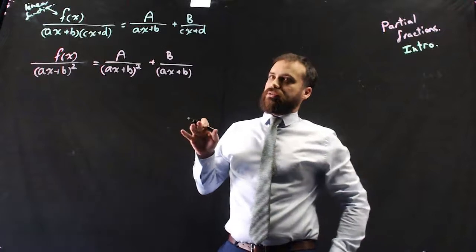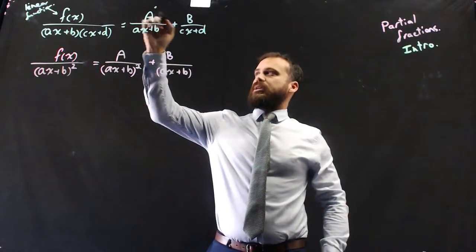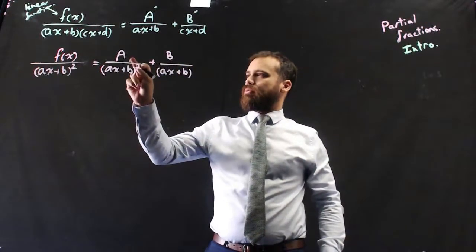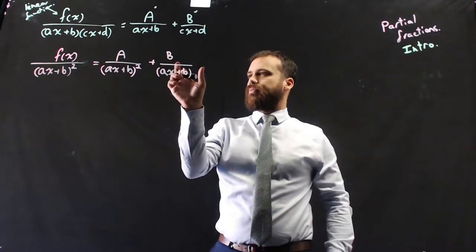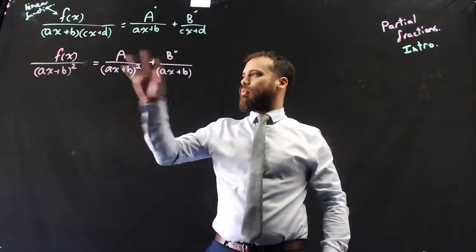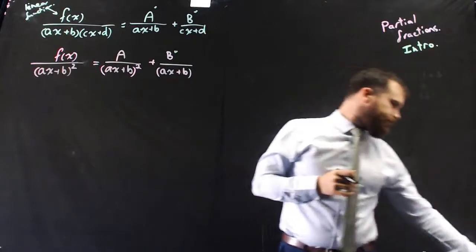Now, what that means for this whole dance is that, in this case, A and B are probably just going to be integers, just numbers. But in this case, A will probably be a number, and B is probably going to be a linear function, mx + c. So just be aware of that. But these are going to be very, very useful moving forward.